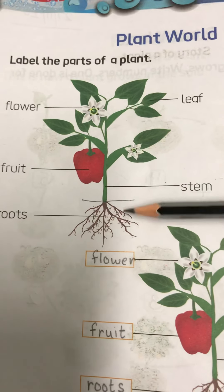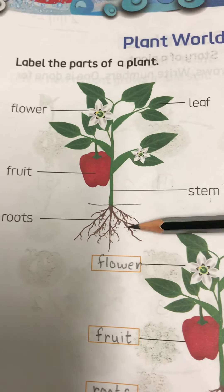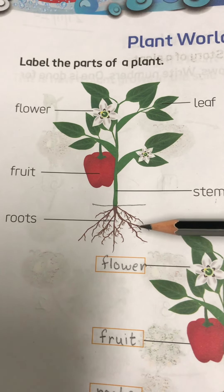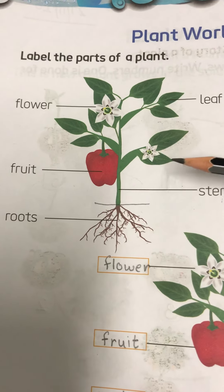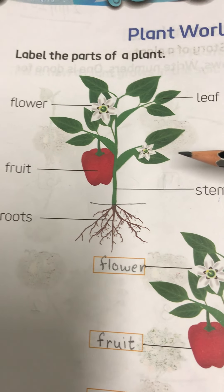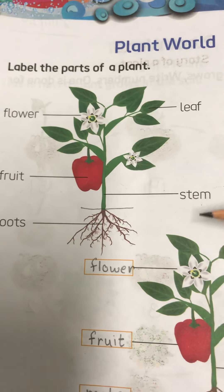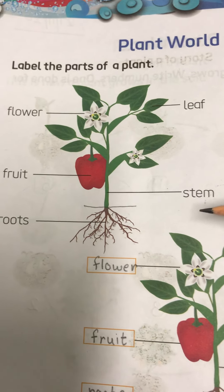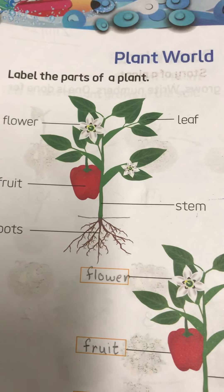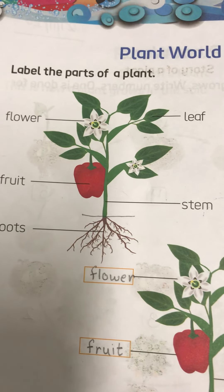So the function of the stem: first, to keep the plant standing upright. Second, to send water and nutrients from the roots to other parts. And also, the food that the leaves prepare is transferred to different parts of the plant with the help of the stem. The main function of the stem is to transfer food and nutrients from the roots and the leaves to the other parts of the plant.